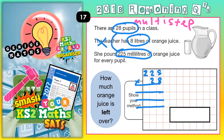Starting with the 8: 8 lots of 5 is 40, put the 0 in and carry the 4. 8 lots of 2 is 16, plus the 4 is 20, put the 0 in and carry the 2. 8 lots of 2 is 16, plus the 2 is 18. So that's 1,800.